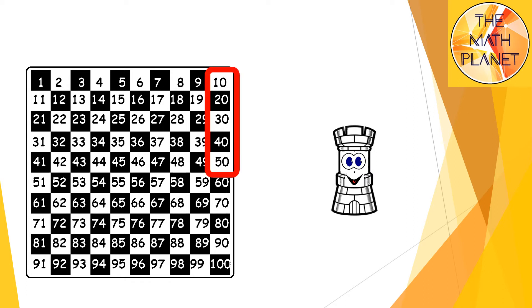If you select any column from the hundred chart, you will notice that as you go up, you subtract tens and as you go down the column, you add tens.